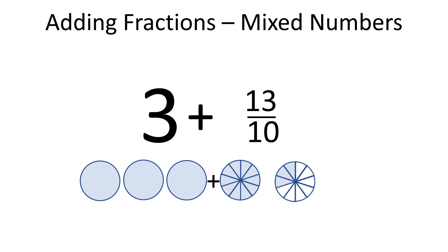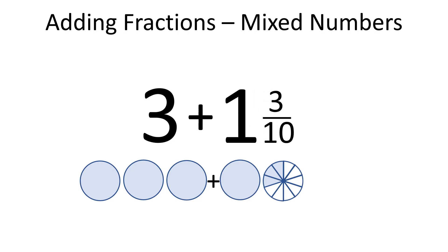13 tenths is an improper fraction. How do we know it's an improper fraction? Watch our video on improper fractions to find out. So 13 tenths is equal to 1 and 3 tenths. And 3 plus 1 and 3 tenths is equal to 4 and 3 tenths.